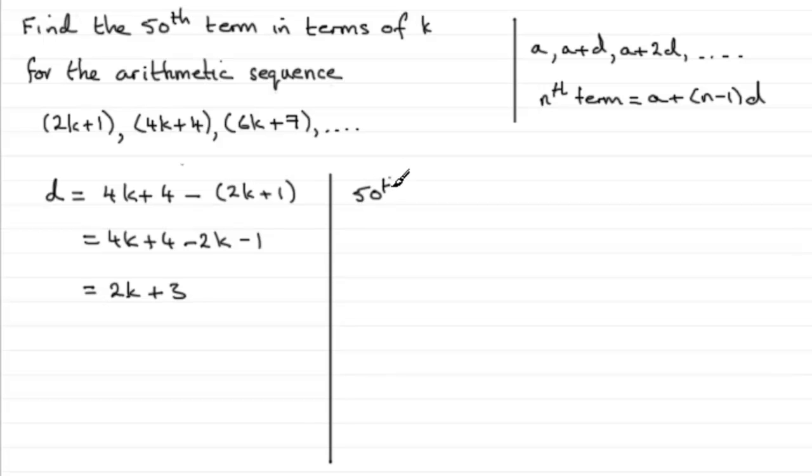So we can just write, 50th term equals, so it's a, the first term, which is 2k plus 1, plus n minus 1, and we've got 50, we're looking at the 50th term, so it's going to be 50 minus 1, which is 49, multiplied by the common difference, and that was 2k plus 3, what we just found just now.